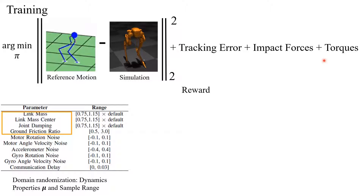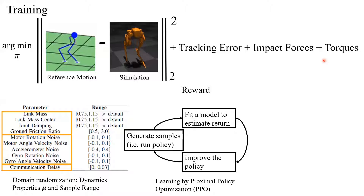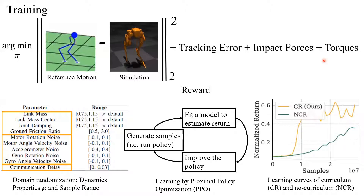We randomize the link mass center, joint damping ratio, and ground friction coefficient in each episode. We also add sensor noise and simulate communication delay between the policy and the joint-level controllers at each time step. We train our agent using PPO, where we run the policy to generate samples and feed the value function, which is used to improve the policy while staying close to the previous one. During training, dynamics randomization is introduced gradually through a curriculum: over the first 2,000 iterations, the range of randomized dynamics parameters is linearly expanded from fixed default values to their maximum ranges.